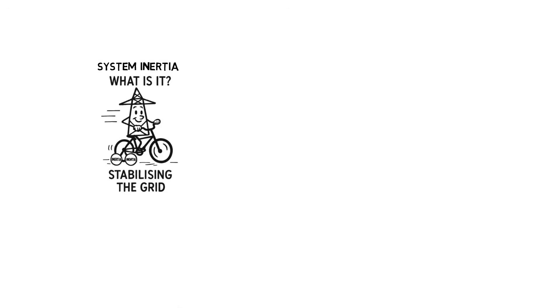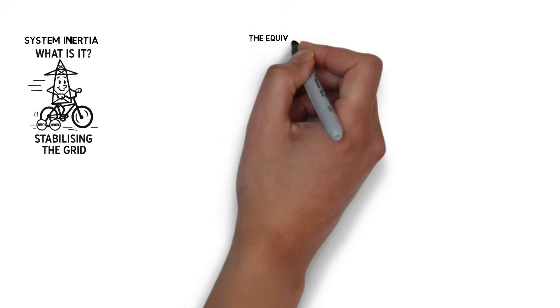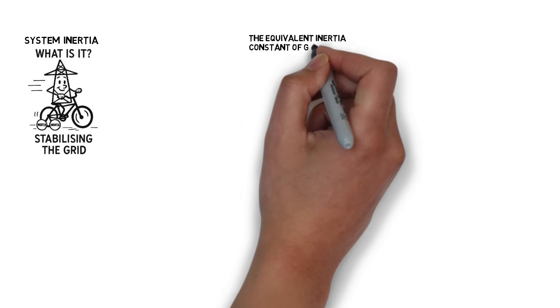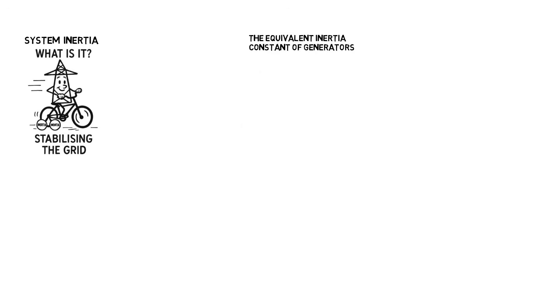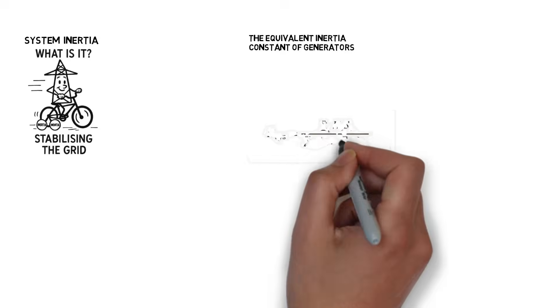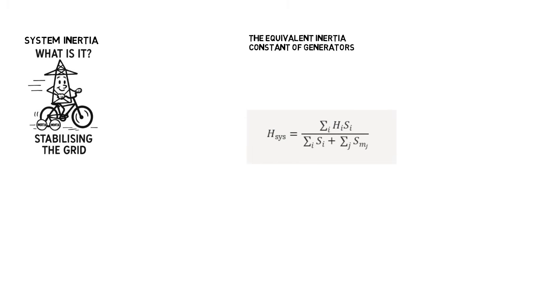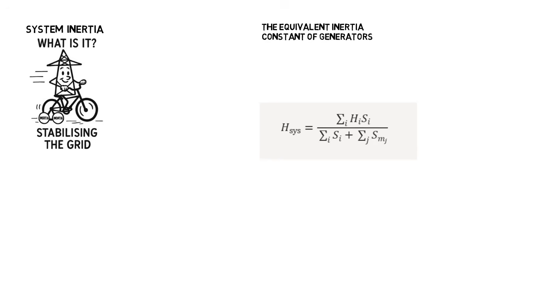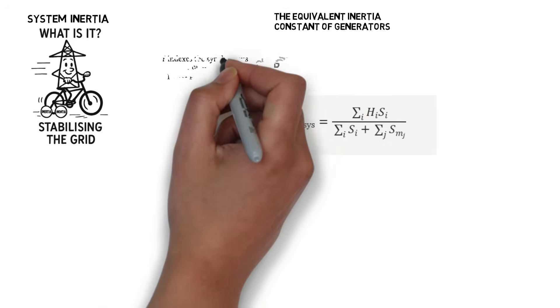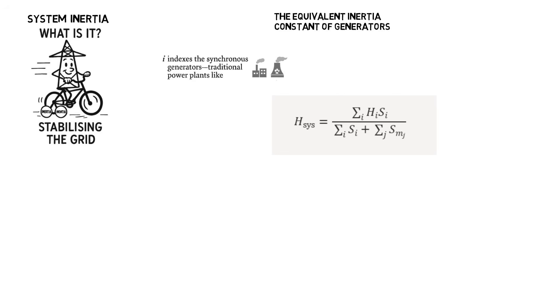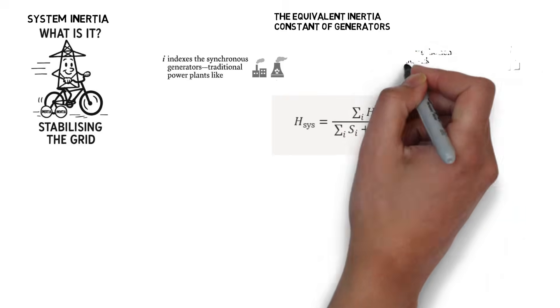The system inertia constant, known as H-system, is a measure of the grid's resistance to frequency changes. In simple terms, it tells us how hard it is to knock the grid off balance. It's calculated using this equation. I indexes the synchronous generators, traditional power plants like gas, coal, and nuclear.